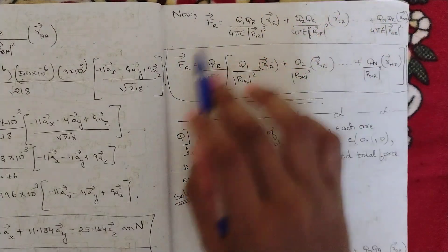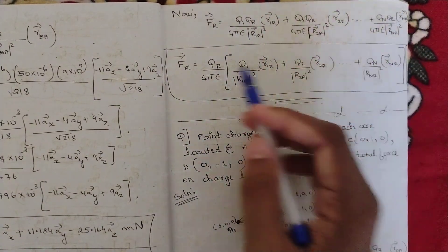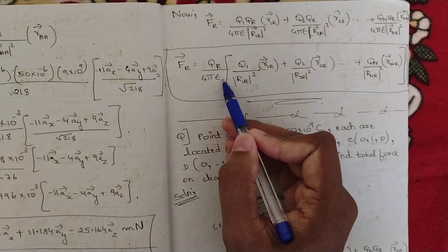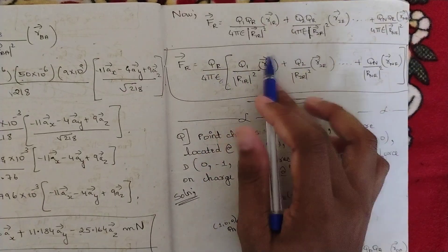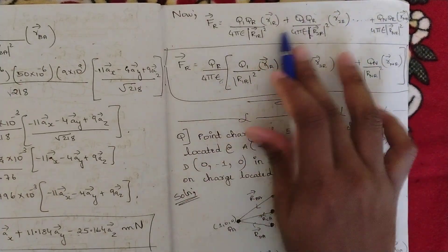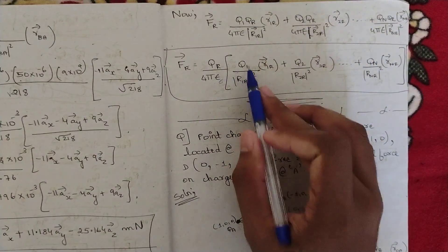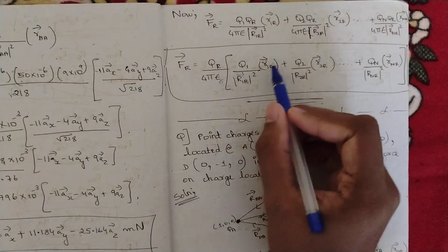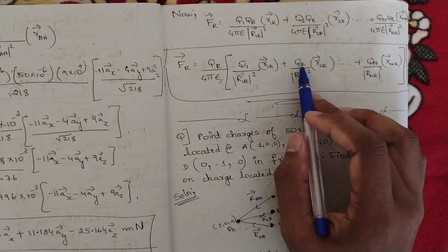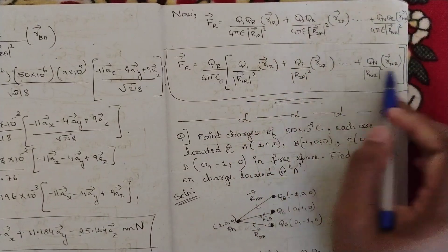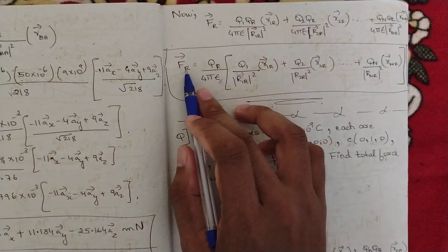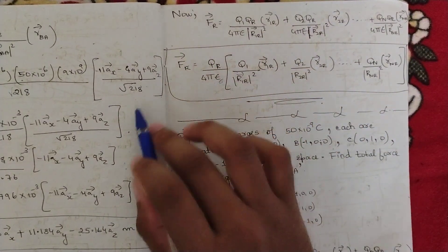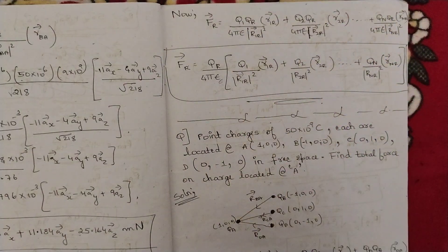Continuing up to qn and qr: unit vector rnr divided by 4π epsilon naught times the magnitude of rnr squared. You can see that in all these terms, qr divided by 4π epsilon naught is common — take that outside. The remaining terms are: q1 divided by the magnitude of vector r1r squared times unit vector r1r, plus q2 times the same, up to qn. This is the equation for the force Fr on a single point charge due to several point charges.